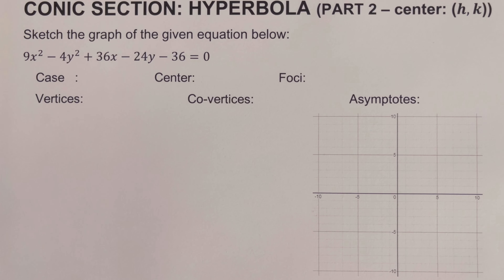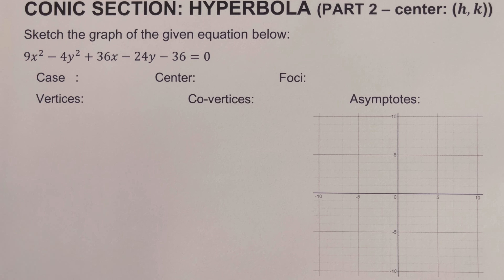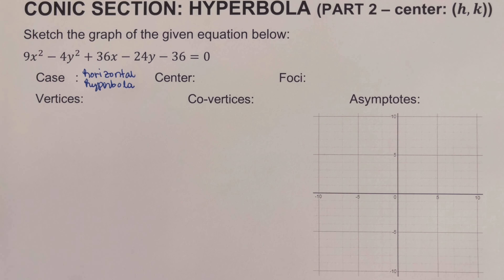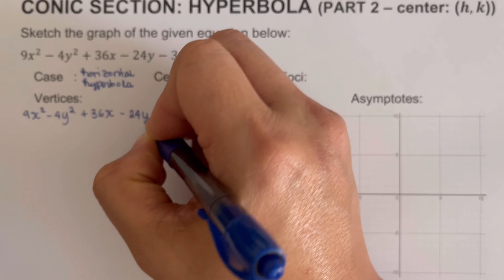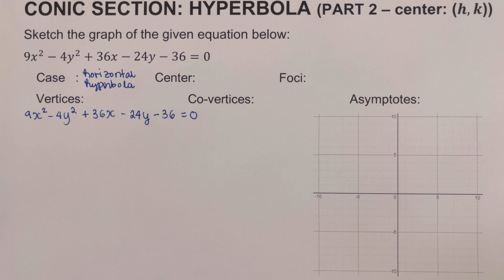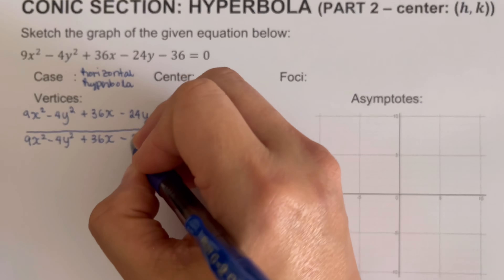Going back to the example, we are going to determine the case for this hyperbola. Notice that the positive squared variable is x — we have a positive 9x squared — so this is a horizontal hyperbola. Our next task is to determine the center, foci, vertices, co-vertices, and asymptotes. The first step is to add 36 to both sides of the equation.